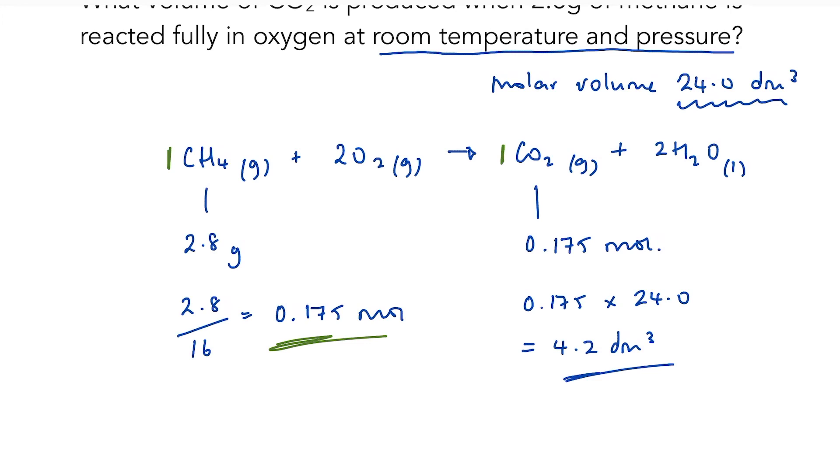In this case, my answer is in decimetres cubed. If you wanted it in centimetres cubed, then it would be 24,000. So 24,000 centimetres cubed is equivalent to 24 decimetres cubed.